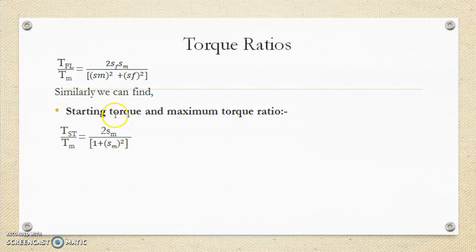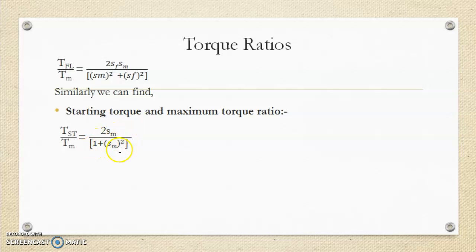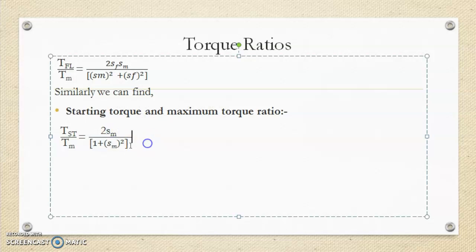Next is the starting torque to maximum torque ratio. Using the formula for starting torque derived in the last lecture and putting it together with maximum torque, by solving similarly you get: Tst/Tm equals 2·Sm divided by (1 plus Sm²). So if you have the value of maximum slip Sm, you can find the ratio Tst/Tm. Thank you.